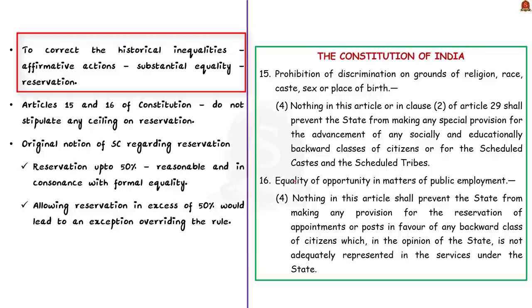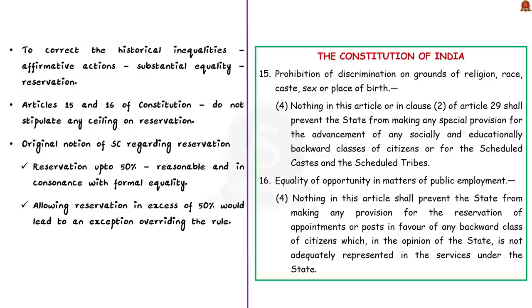The Constitution provides space for the government to correct historical inequalities through affirmative actions that provide substantive equality. Affirmative action means positive steps taken to increase the representation of women and minorities in areas of employment, education, and culture from which they have been historically excluded — and the affirmative action we are talking about is reservation. Article 15(4) enables the state to make special provisions such as reservation for the advancement of socially and educationally backward classes. Article 16(4) also enables the state to make provisions for reservation of appointments or posts in favor of any backward class of citizens not adequately represented in services under the state. However, these articles do not stipulate any ceiling on reservation. It was assumed by the Supreme Court that reservation up to 50% is reasonable and in consonance with formal equality.